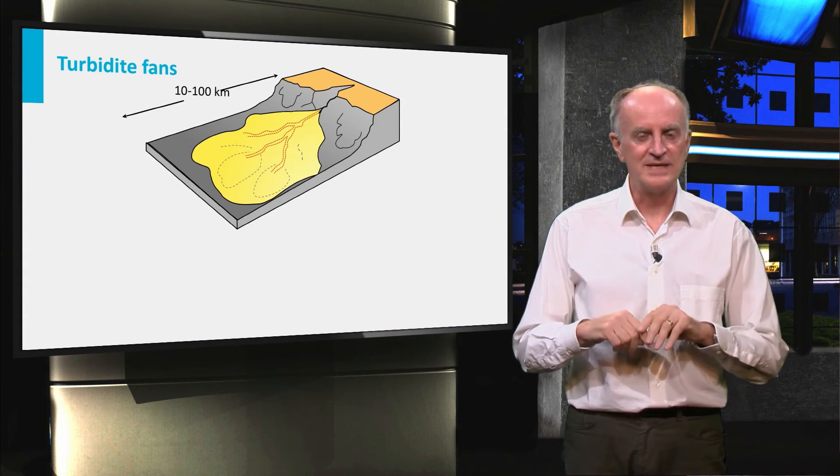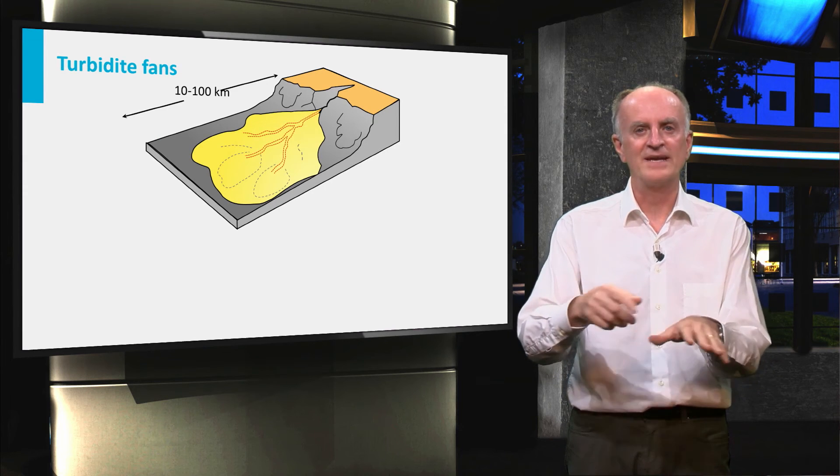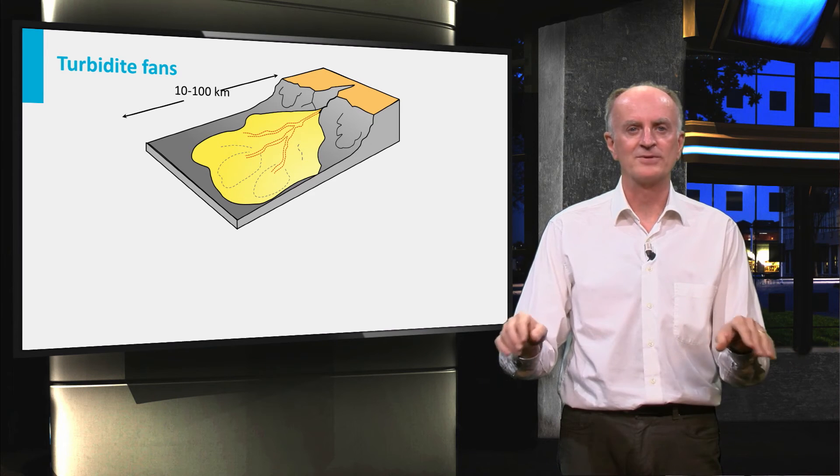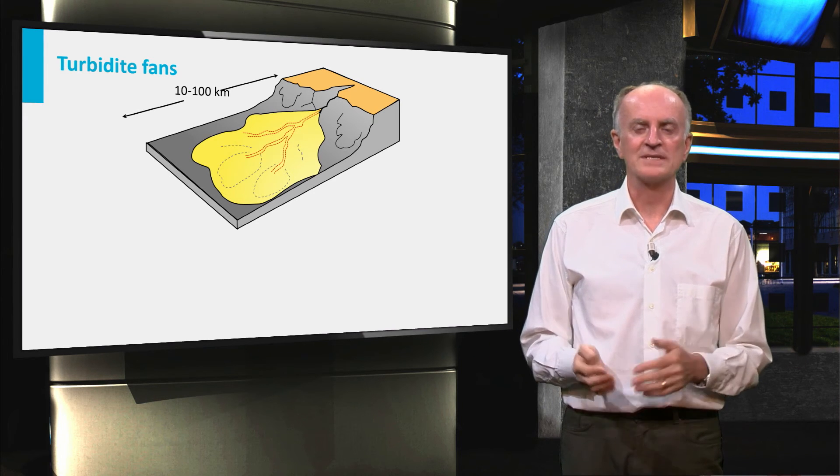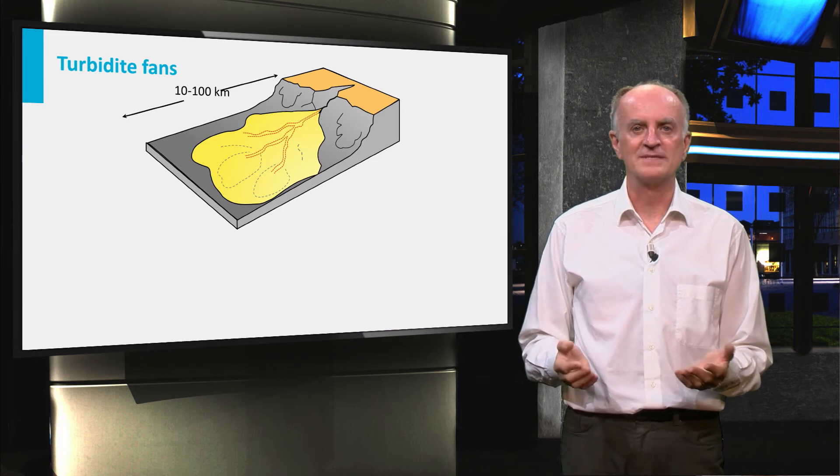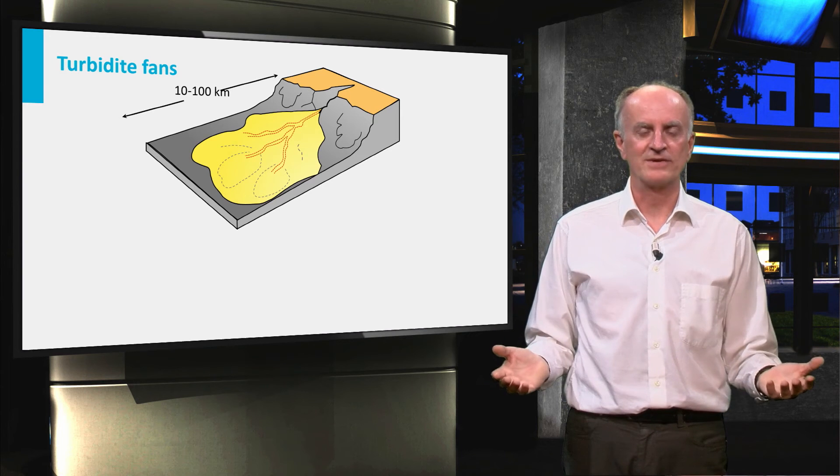In the map view you can see the different domains and the associated processes. The first-order feature is the fan created by sediment transported by the turbidites in the abyssal plane. The shape of the fan recalls in some aspects the alluvial fans we have seen in previous clips, but the dimensions are much larger, often several tens of kilometers.